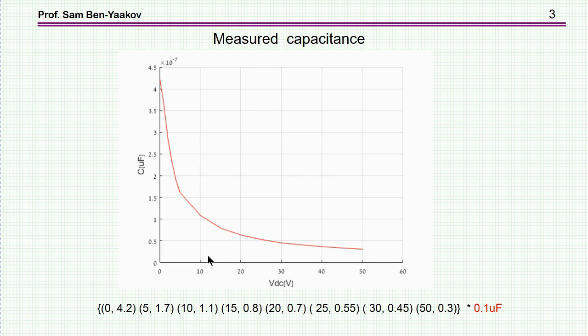Here is an example of a capacitor that we have actually tested and measured. This is a 63 volt capacitor. It is supposed to be a 1 microfarad capacitor, but we have found that the initial value is only 0.42 microfarad, and it drops extremely fast as the voltage on it increases.